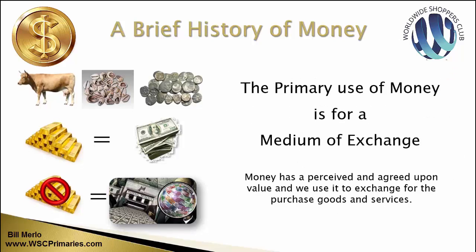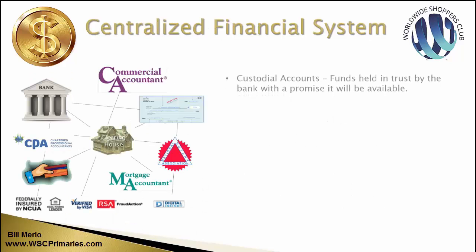What is money for? Money is basically a medium of exchange. Money only has perceived value, and it's agreed upon that it has that value, and we use it to exchange for purchases of goods and services. All of this is important and relative to our concept of digital currency.